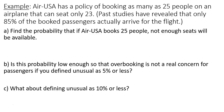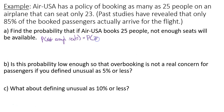In Part A, we will find the probability that if AirUSA books 25 people, not enough seats will be available. That plane only has 23 seats and they sell as many as 25 tickets. So we have to calculate the probability that 24 people show up and the probability that 25 people show up. These are the only two scenarios where there would not be enough seats.